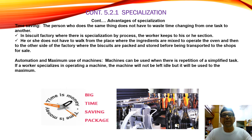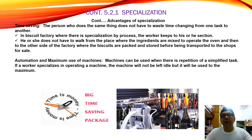Time saving: a person who does the same thing does not waste time changing from one task to another. For example, in the biscuit factory with a specialization process, the worker stays in one section only. If they are mixing the flour, they are just mixing the flour. They don't need to move to bake the flour, use the oven, or do the packaging. No need to change place — no need to move from the ingredients section to the oven and then to the other side of the factory where biscuits are packed. This is where time is saved because the movement of people is at one place.